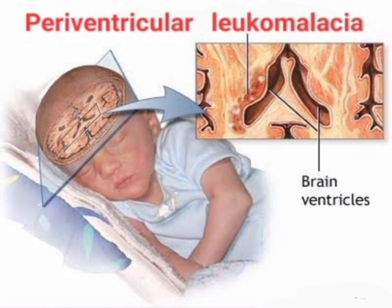In periventricular leukomalacia, or periventricular cyst, this white matter area is deprived of blood and oxygen, leading to softening of this area. Damage to this area causes problems with movement, other body functions, and loss of functions.